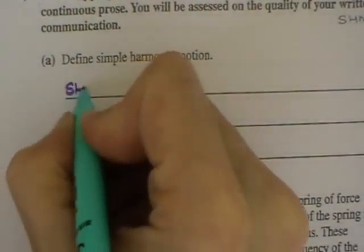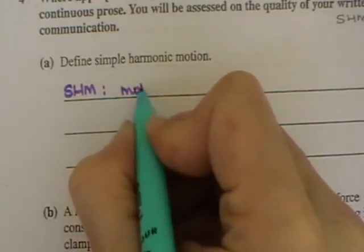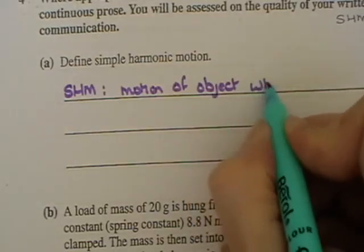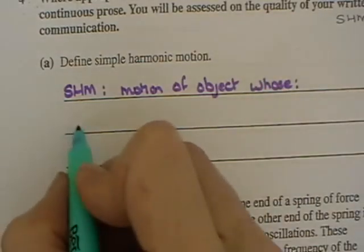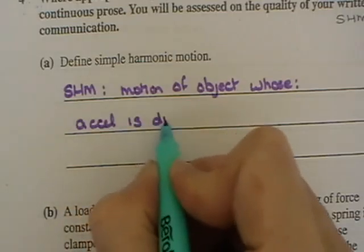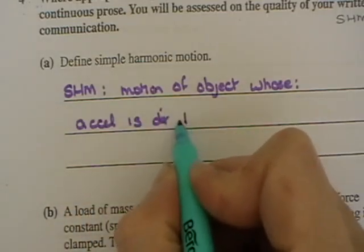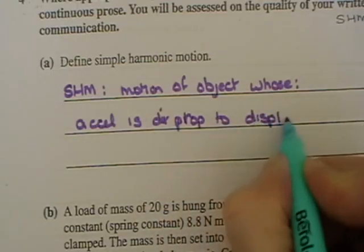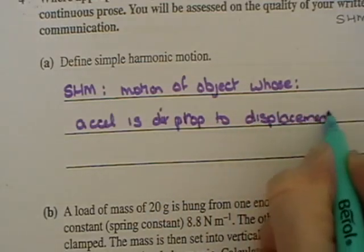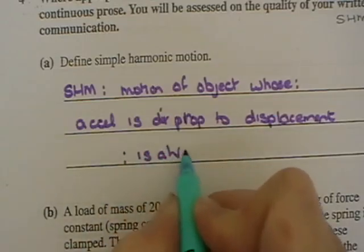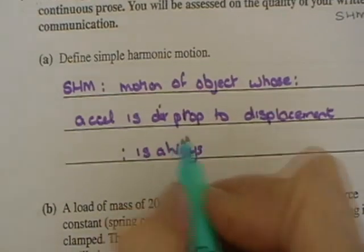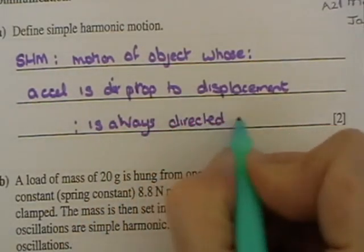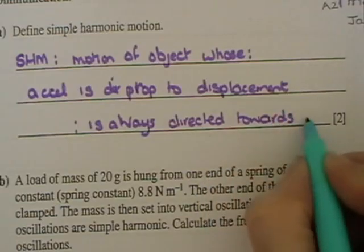So simple harmonic motion is the motion of an object, and it's all about acceleration. Two bits to it: acceleration is directly proportional to its displacement, and acceleration is always directed towards a fixed point, or the center of the oscillation.